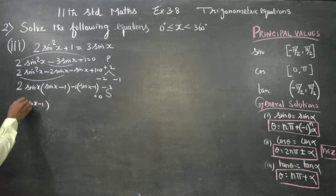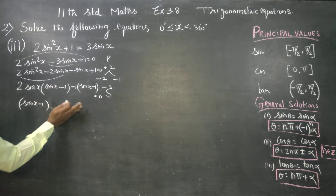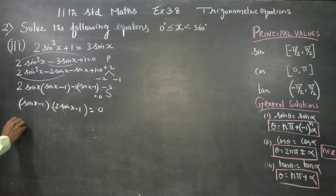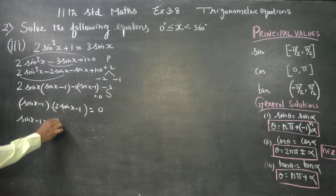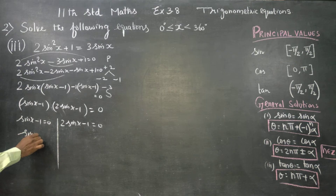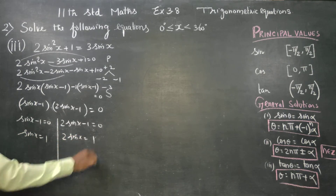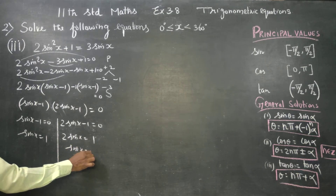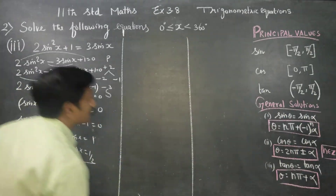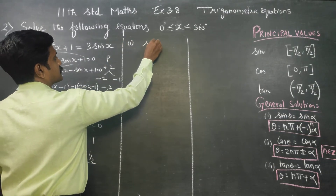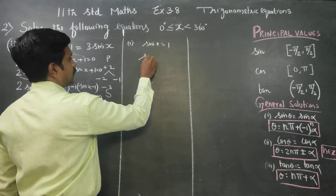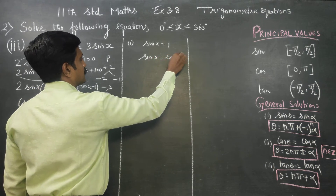The bracket gives (sinx - 1) = 0, and (2sinx - 1) = 0. So sinx = 1 and 2sinx = 1, which means sinx = 1/2. Now sinx = 1. Sin 90° = 1, so sinx = 1.